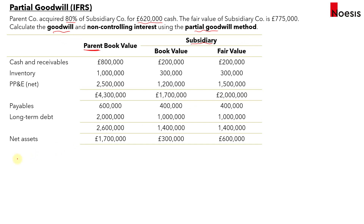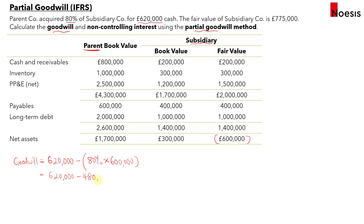Using the partial goodwill method, goodwill equals the acquisition price of £620,000, minus 80% (the percentage acquired), multiplied by the fair value of the subsidiary's identifiable net assets of £600,000, giving £480,000. So goodwill amounts to £620,000 − £480,000 = £140,000, which will be recorded under non-current assets.